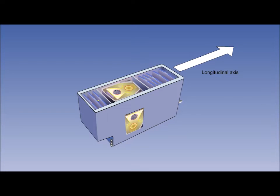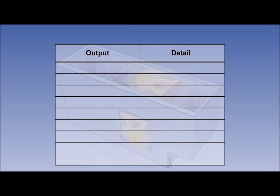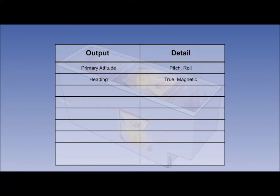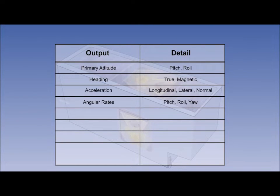This is an inertial reference unit. It provides the outputs for the aircraft's avionics. Firstly, it gives primary pitch and roll latitude, as also provided by the INS. It gives both true and magnetic heading. Inertial systems operate in true because they align themselves by detecting Earth spin — the INS gave us true heading. The IRS gives angular rates of pitch, roll and yaw, just as the INS did. It gives inertial velocities north-south, east-west and ground speed, as the INS did.